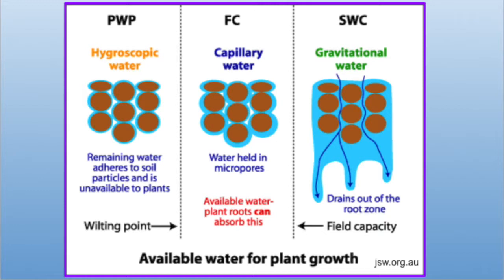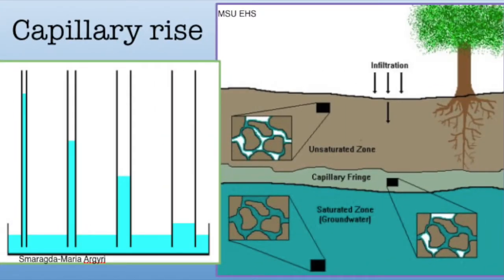Plants use water in the vadose zone by pulling it into their roots through negative pressure. The wilting point is reached when the water content is too low for plants to be able to use. The wilting point of plants varies by species and environmental conditions, as plant root depths vary widely. Near the bottom of the vadose zone, just above the water table, is the capillary fringe.